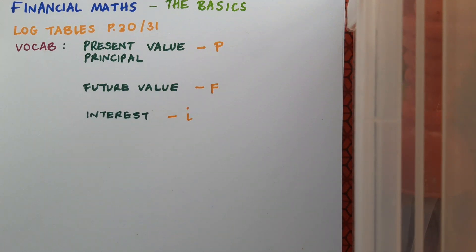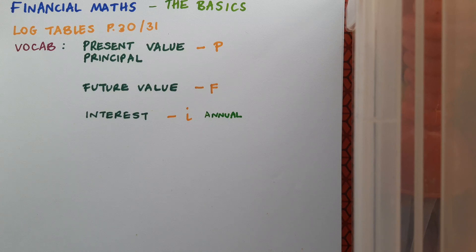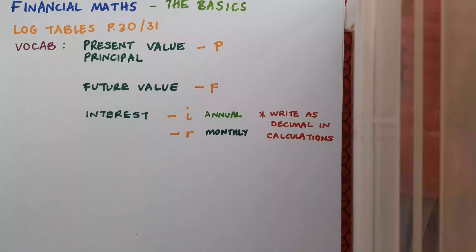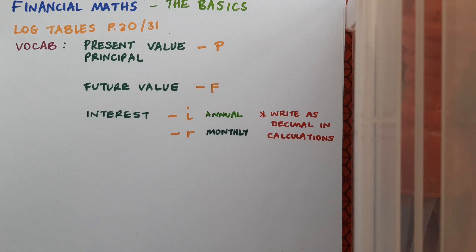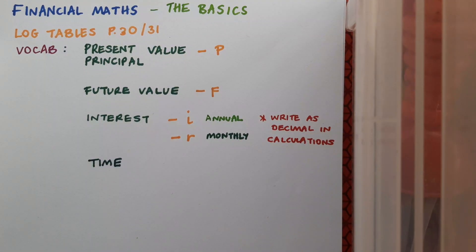Interest is the amount as a percentage that is earned by the investment or charged on the loan. When we're dealing with annual interest we call this i and if we're dealing with interest over a different period such as a month we tend to call it r. We'll always have the interest as a decimal in our calculations. Time is represented by the letter t and it refers to the number of times that interest is applied to an amount. Often t represents years but sometimes it may represent months.